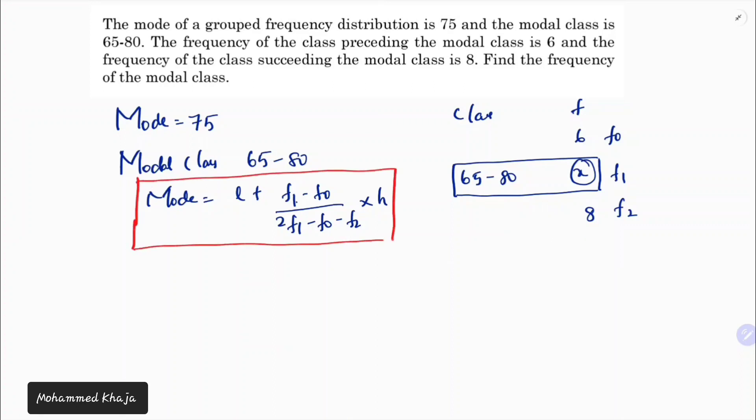Now I'll substitute the values. Mode value is 75. Lower boundary is 65, so lower boundary is 65 plus F1. The frequency of the modal class is x.